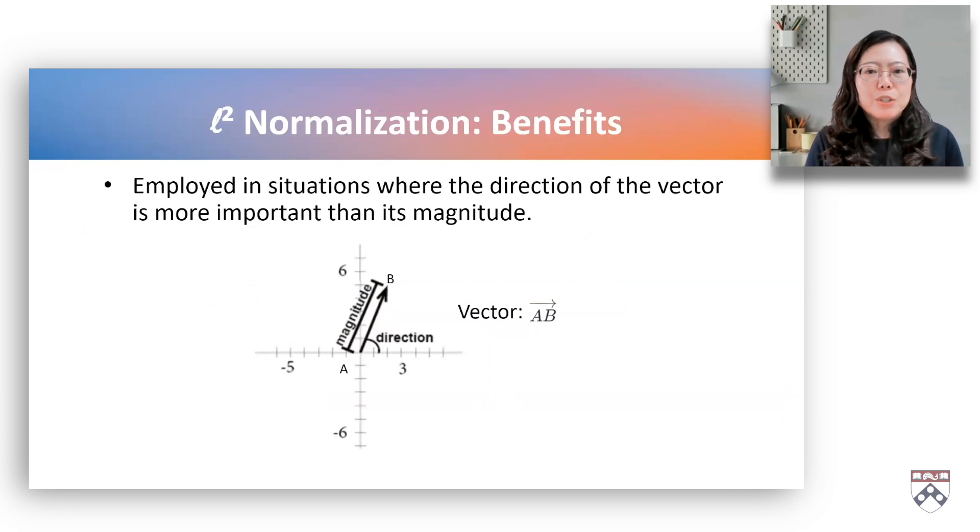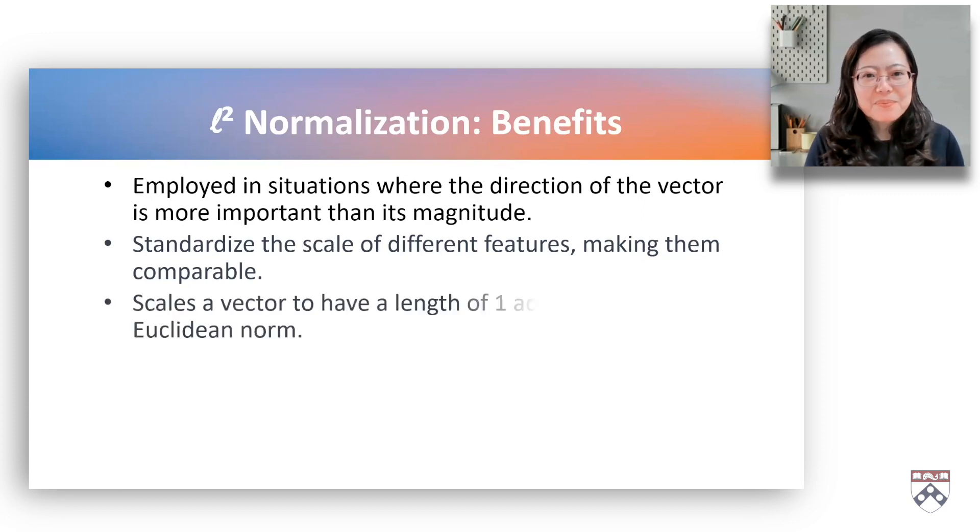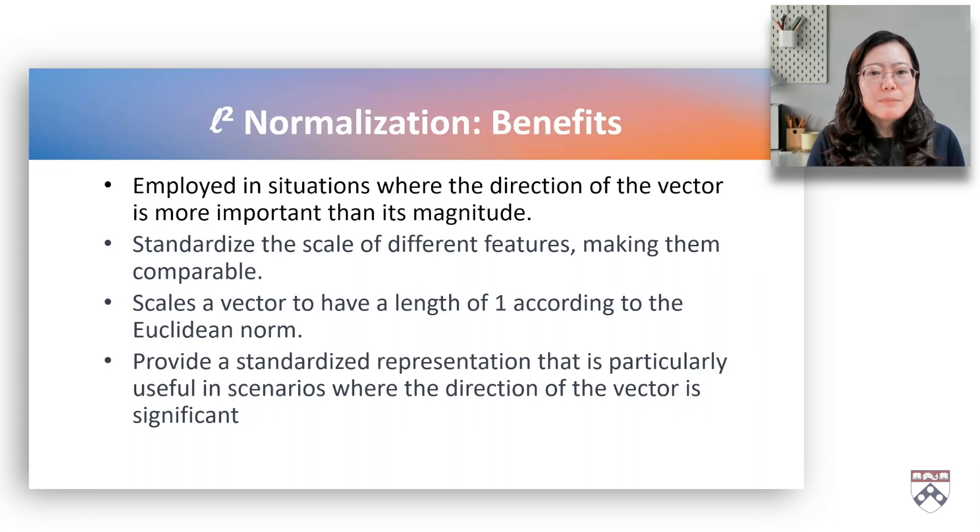It is commonly used in situations where the direction of the vector is more important than its magnitude. A vector is a mathematical object that has both magnitude and direction. The magnitude of a vector is a scalar quantity that represents the size or length of the vector. L2 normalization is often used in the context of feature vectors, where it helps standardize the scale of different features, making them comparable. L2 normalization scales a vector to have a length of 1 according to the Euclidean norm.